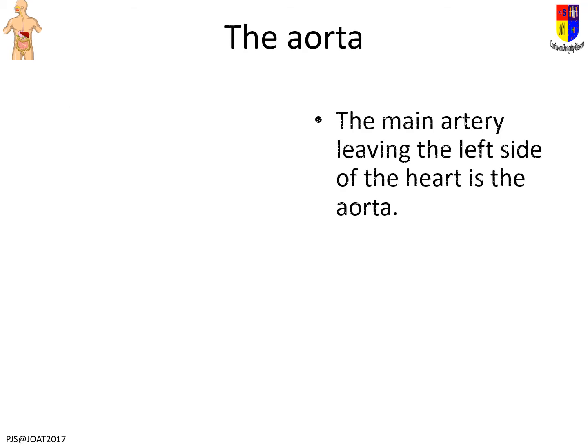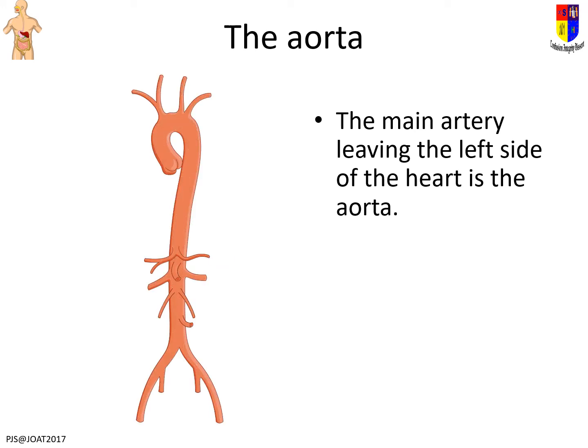The aorta is the main blood vessel coming out of the heart. You have what's called the aortic arch, and once it's come out of the heart it splits into smaller and smaller branches as it carries blood through the body. On this diagram you can't see the coronary arteries, but they are also really important and come out from the aorta.